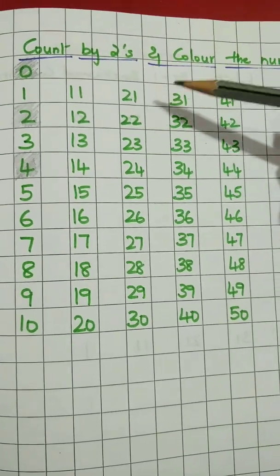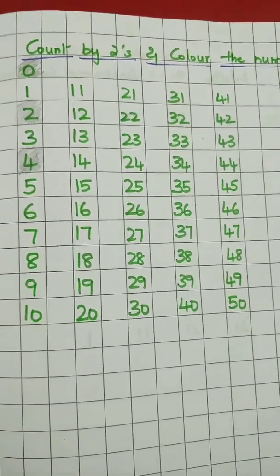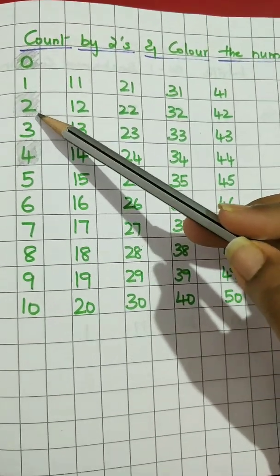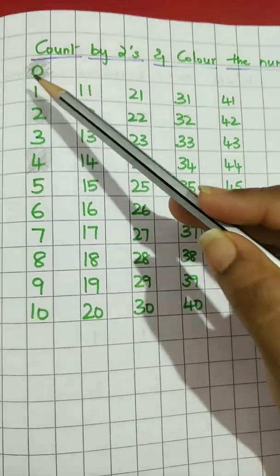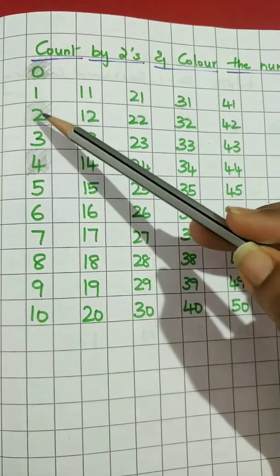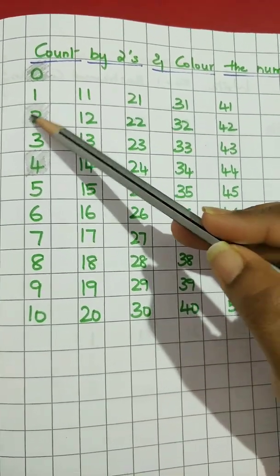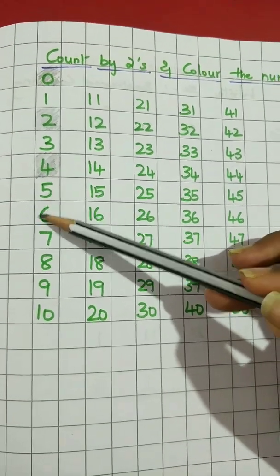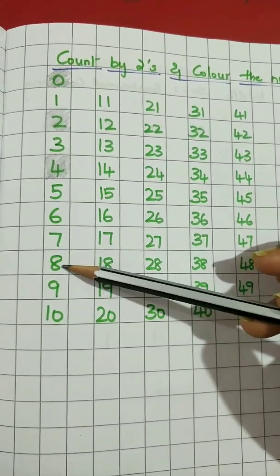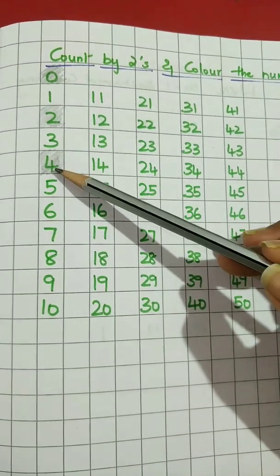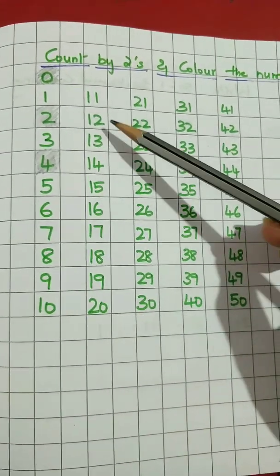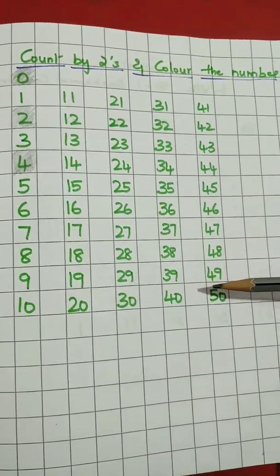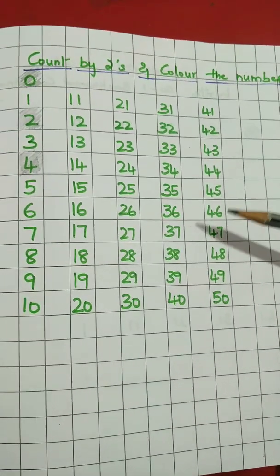Now count by twos and color the numbers. I have started from zero with pencil shading — you can take your crayons and color it. Skip one and color two. Skip three and color four. Skip five and color six. Skip seven, color eight. So it is two, four, six, eight, ten. Then skip eleven and color twelve. Same way, color the skip counting numbers by two.